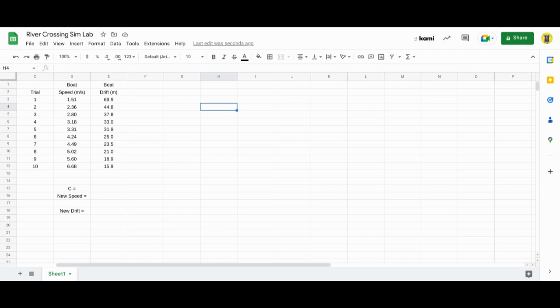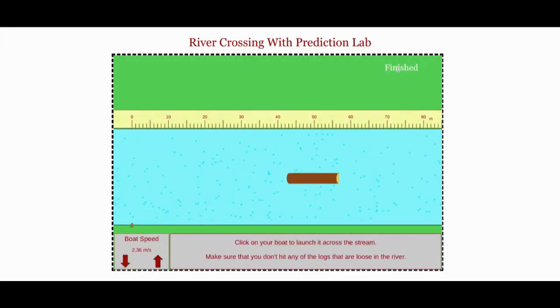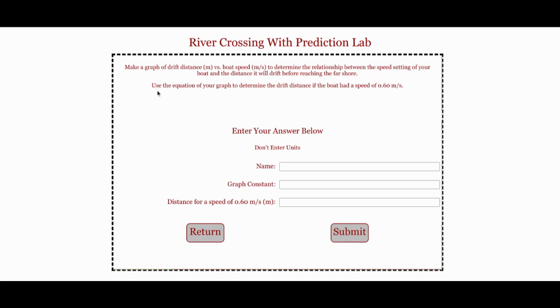I have my 10 trials filled in to the spreadsheet, so now I want to insert a graph. If you go back to the sim, when you hit finish, it tells you you want to do a graph of the drift distance versus the boat speed.